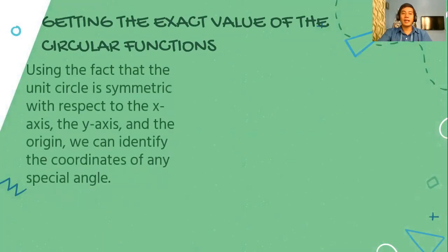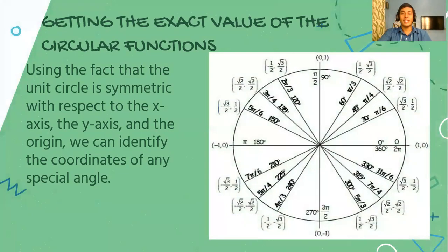Using the fact that the unit circle is symmetric with respect to the x-axis, the y-axis, and the origin, we can identify the coordinates of any special angle. All of these special angles are listed, and it's very easy to get the exact value using this illustration.